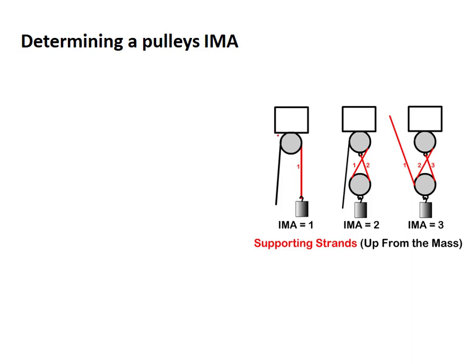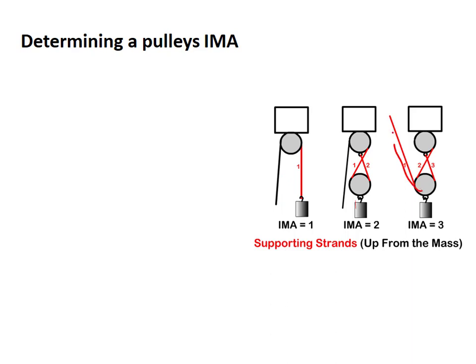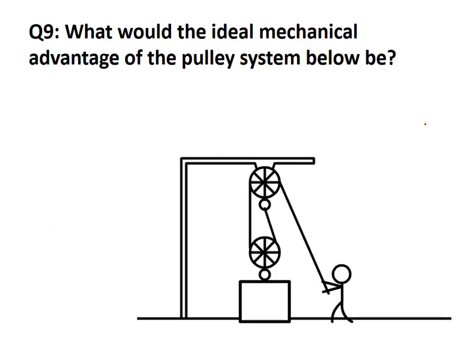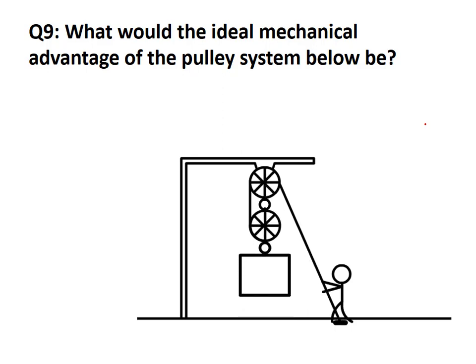For a pulley system, you can quickly find the IMA by counting the strands going upward from the object. Only strands that support the weight of the object count — the strand you pull with does not count. For example, if two strands go up from the object, IMA = 2. In another configuration with three supporting strands, IMA = 3. Look at where the weight is and count all strands going up from it.